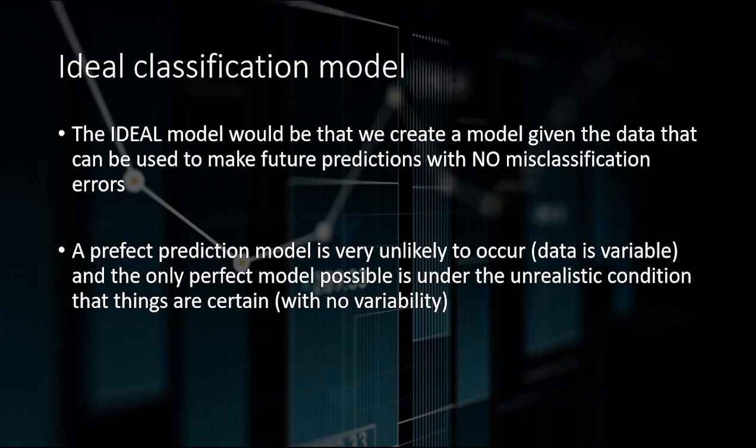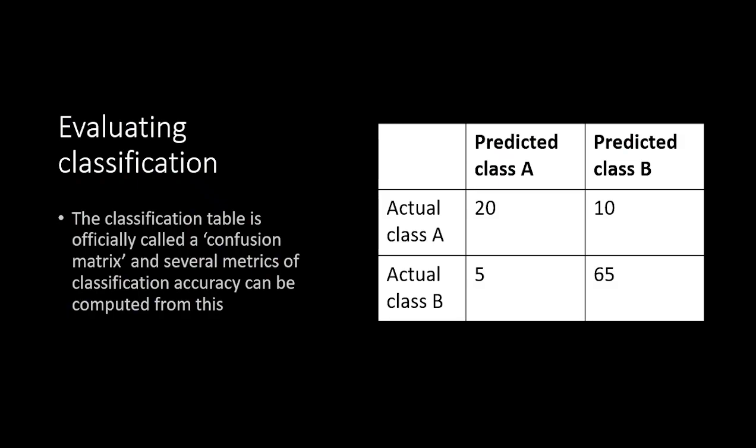The ideal model would have no misclassification, but that just isn't going to occur — except in my small example dataset. In general, it's not going to happen that you have a perfect prediction model. This also brings up the issue that when you make a mathematical model predicting, for example, who's likely to default on a mortgage, you're going to get some wrong. There will be people turned down for a mortgage based on the model that probably shouldn't have been — but that's just how it is. This is different from bias, by the way. Bias is when your data is not random. This is just because of the nature of variability in data and you can't do anything about it.